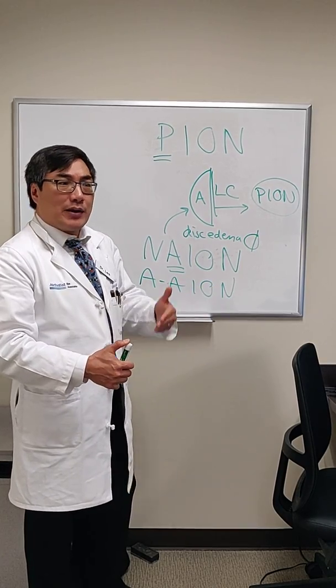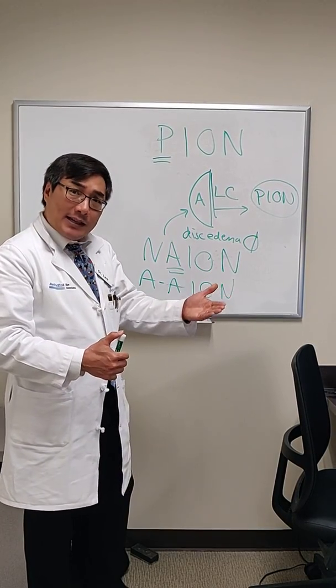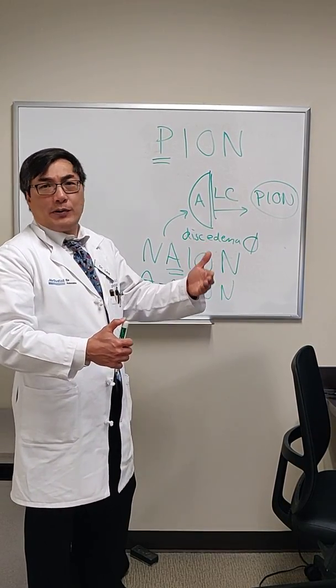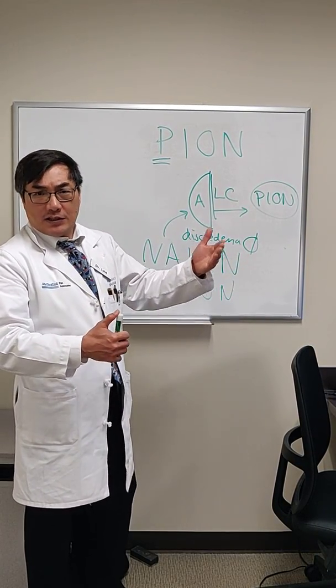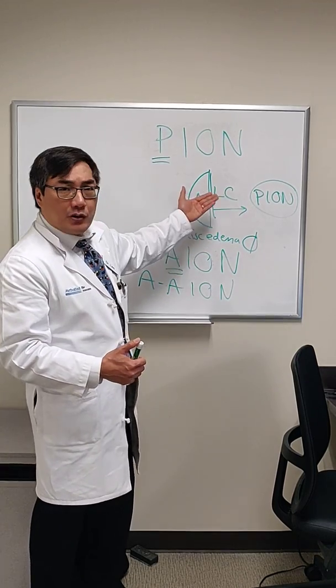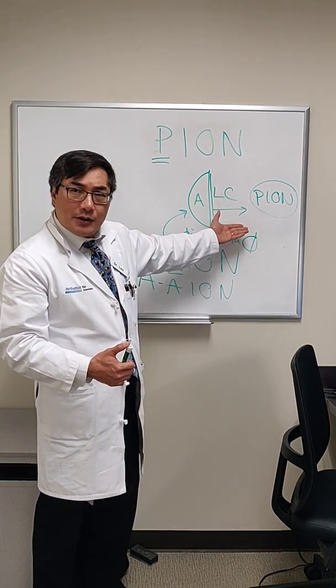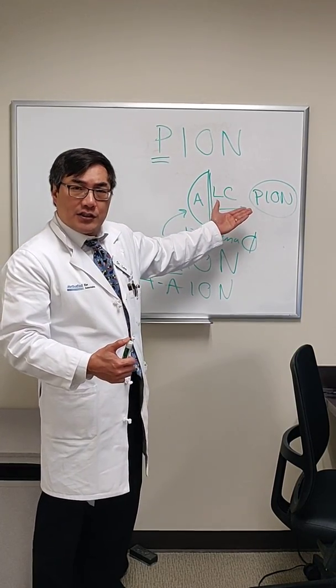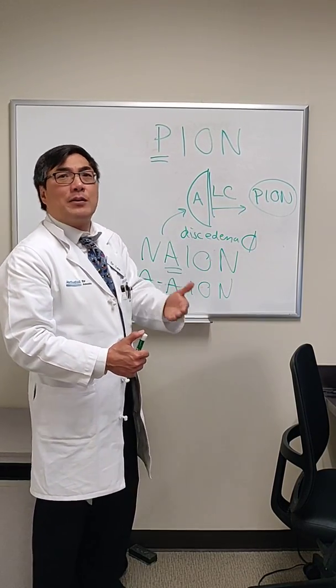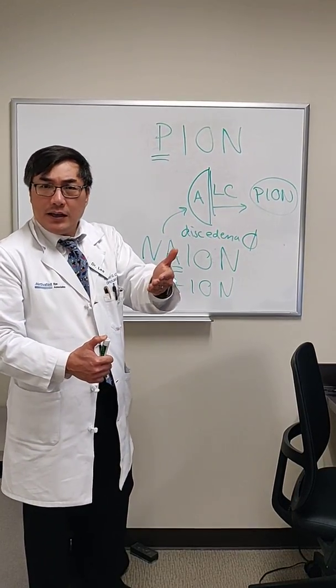That normally means we have to do an MRI scan — head, orbit, with gadolinium and fat suppression — to make sure there's no enhancement of the optic nerve, ruling out optic neuritis or a compressive lesion.